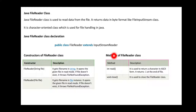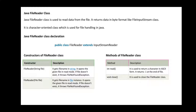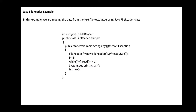The methods of FileReader class are: int read() — used to read a character in ASCII form, returns minus one at the end of the file; and close() — used to close the file that was opened.